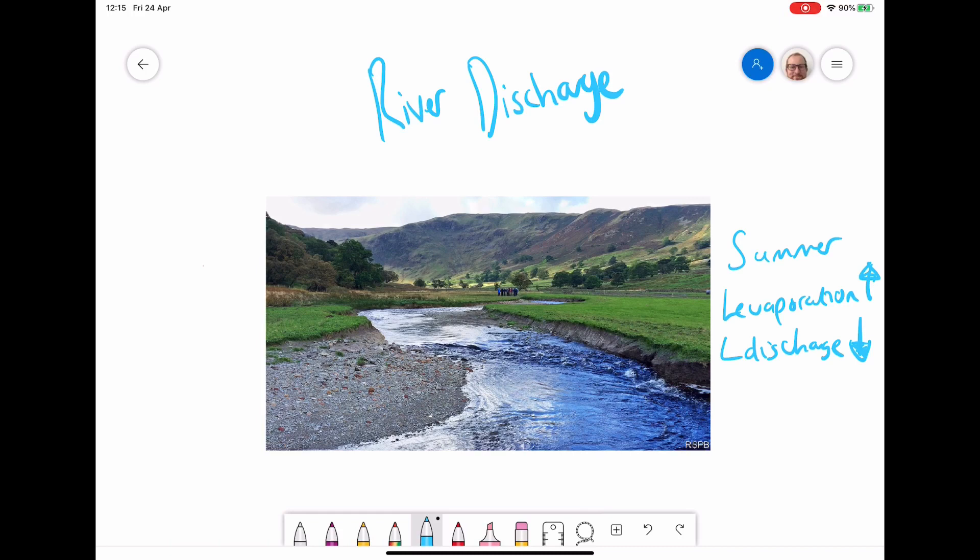Because the discharge is lower, more of the water is in touch with the base of the river, and there's more friction, so it's slower, so deposition would be higher.